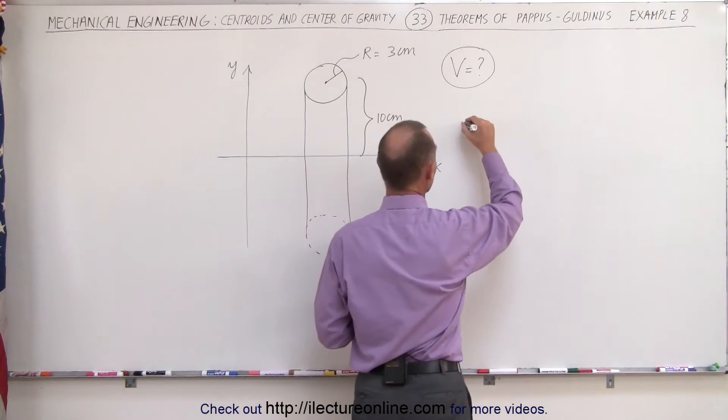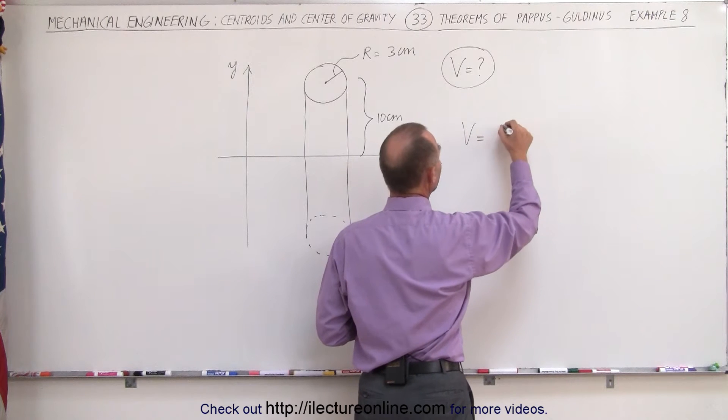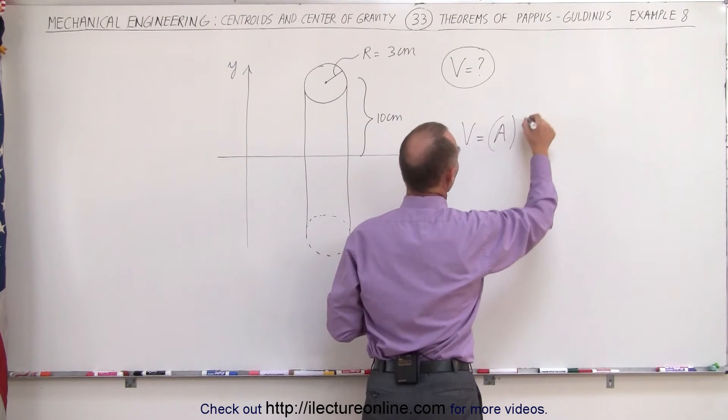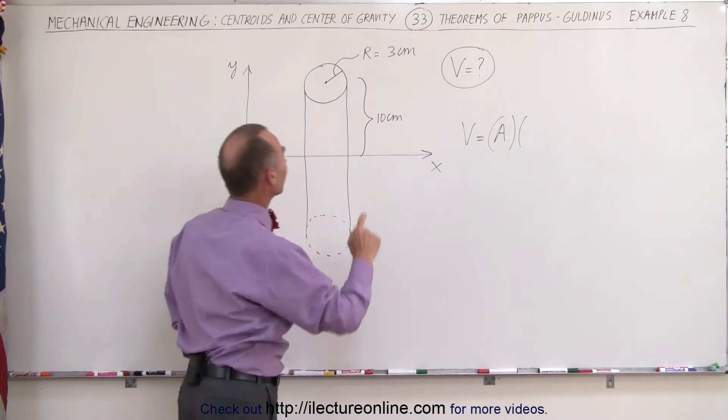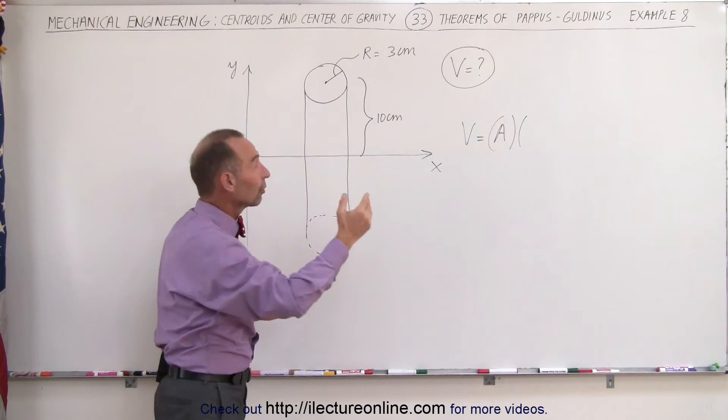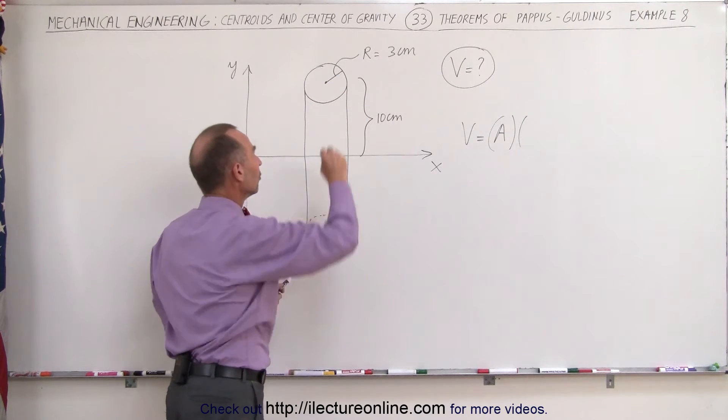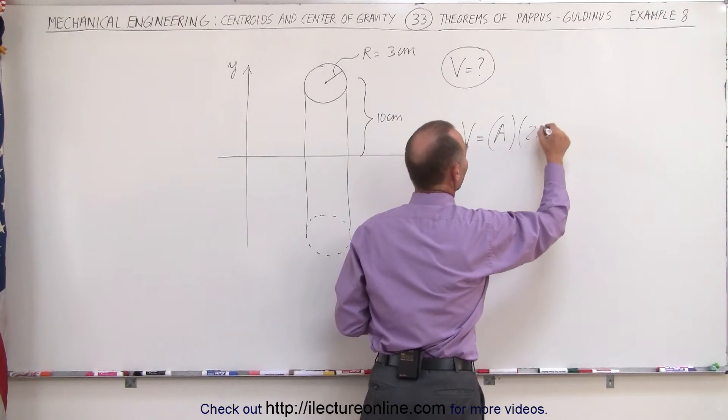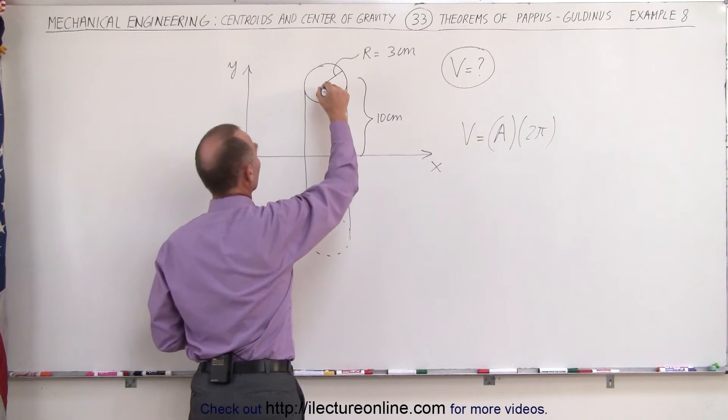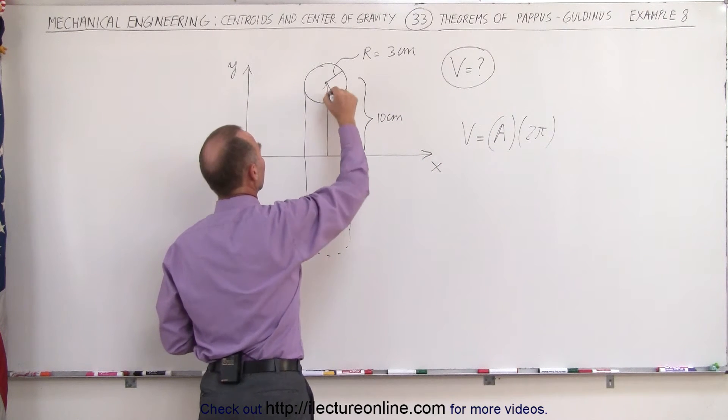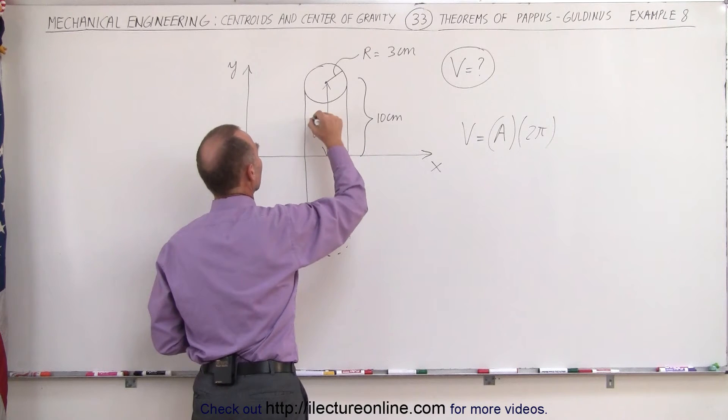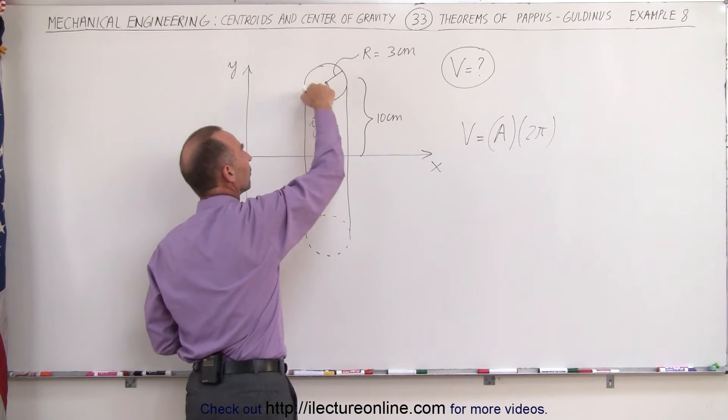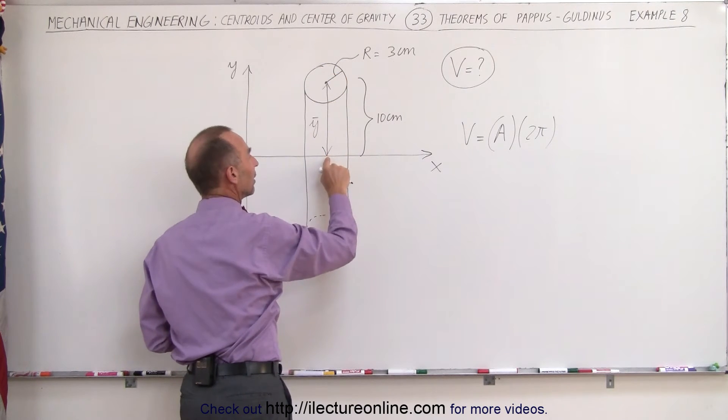The theorem tells us that the volume can be found by taking the area of the face here that we're revolving around the x-axis and multiplying it times the distance the center of mass of that area or the centroid of that area takes as it revolves around it. So that would take a circular path and the distance of the circle path is 2π times the radius of that circle and the radius of that circle would be this distance right here and that distance is equal to the y-coordinate of the centroid of the center of mass of the centroid of this circle right here relative to the x-axis.